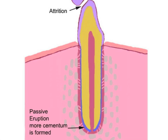With function there is attrition, which is the wear of tooth grinding against tooth. To maintain the height of the tooth in the alveolar bone, there is further deposition of cementum at the root end. This is referred to as passive eruption.